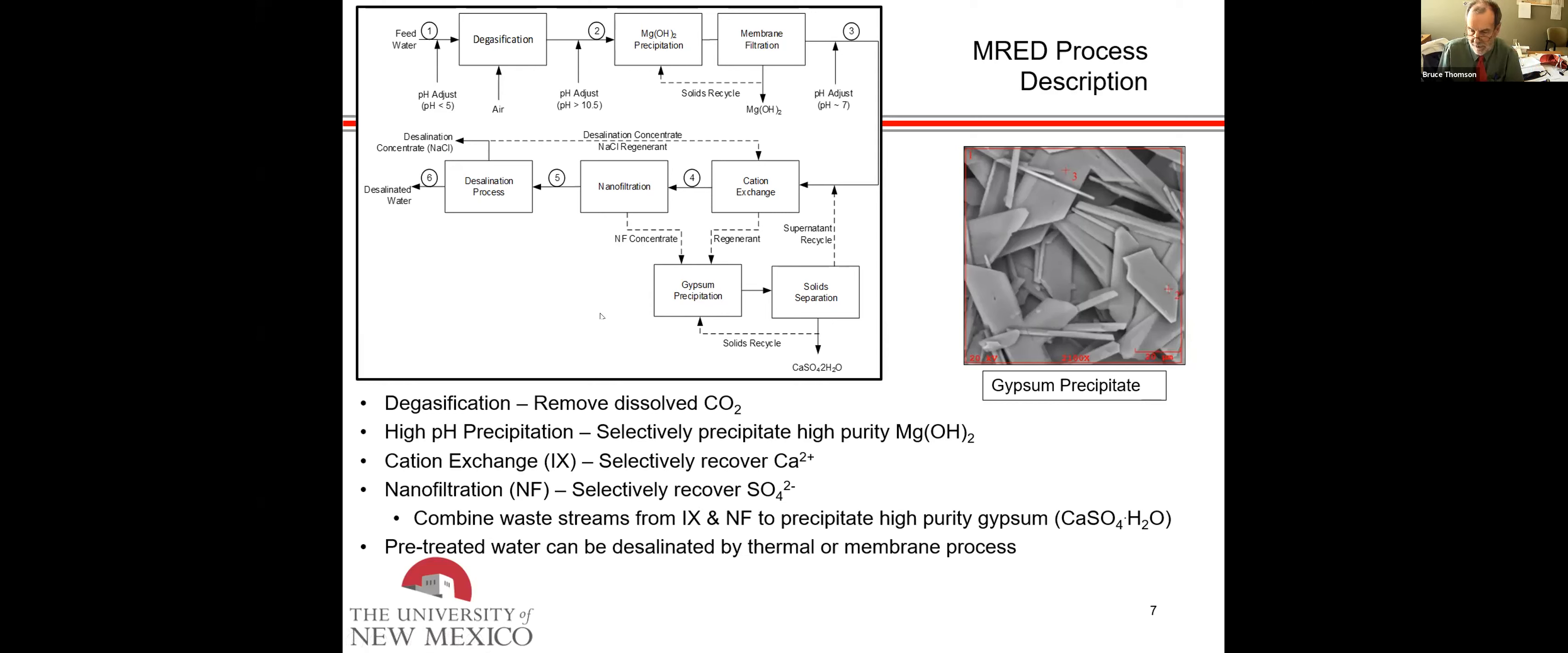We combine those and it precipitates gypsum. There's an SEM image of gypsum particles, real pretty flat. The mineral is very high purity. Gypsum is used in wallboard. There's a gypsum plant up by Bernalillo. It's used as a soil amendment and so forth. And then the pre-treated water can be removed by any desalination process.